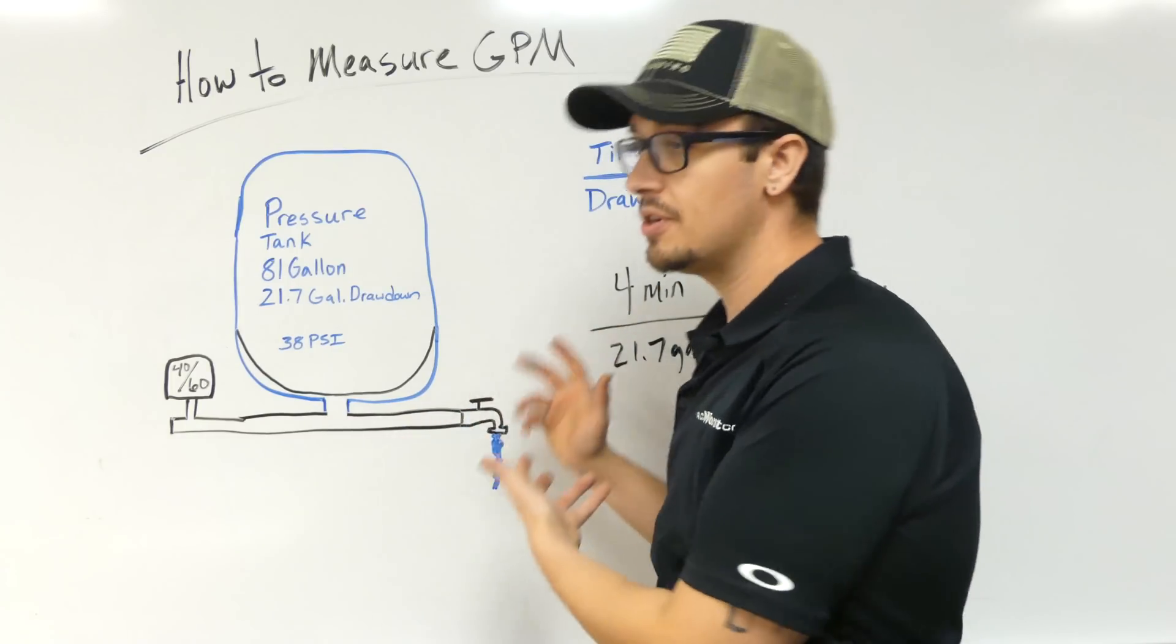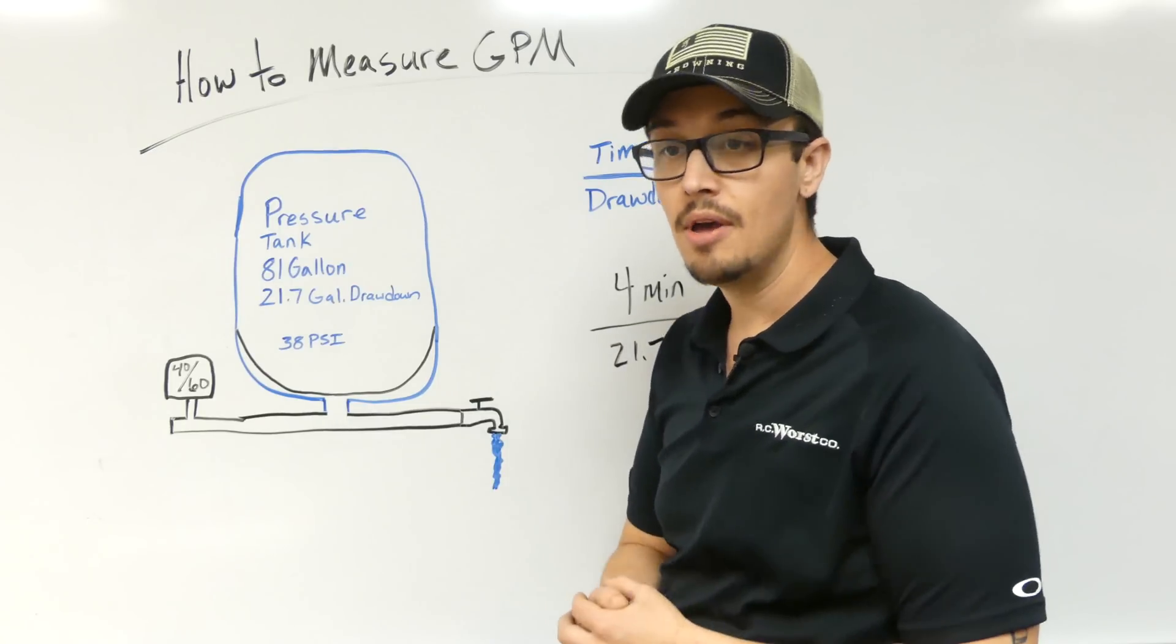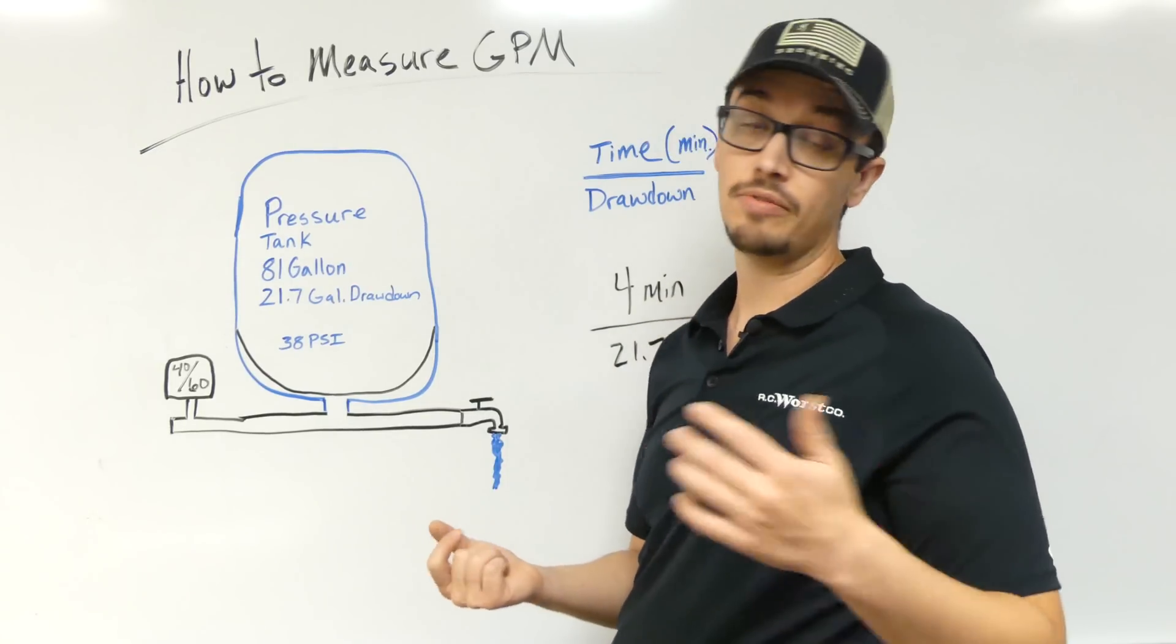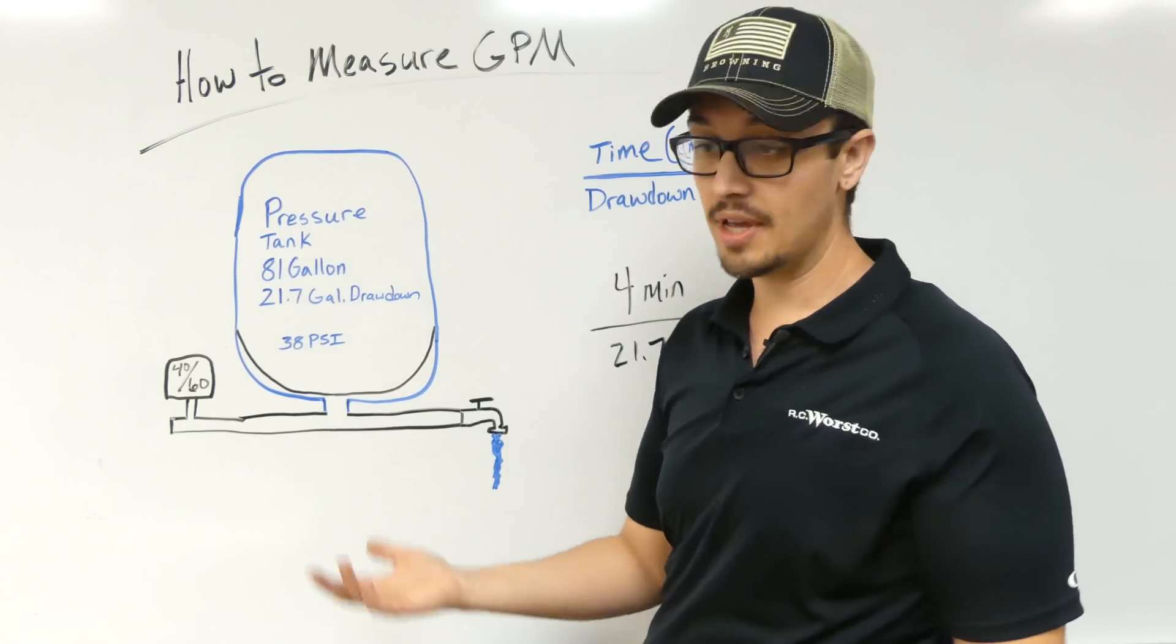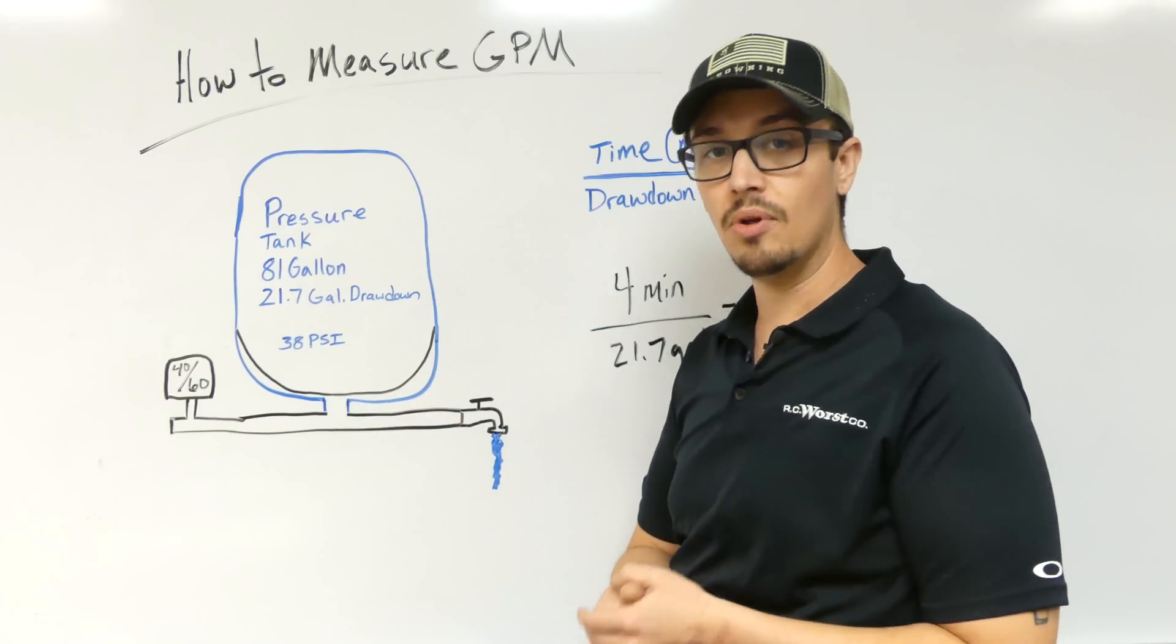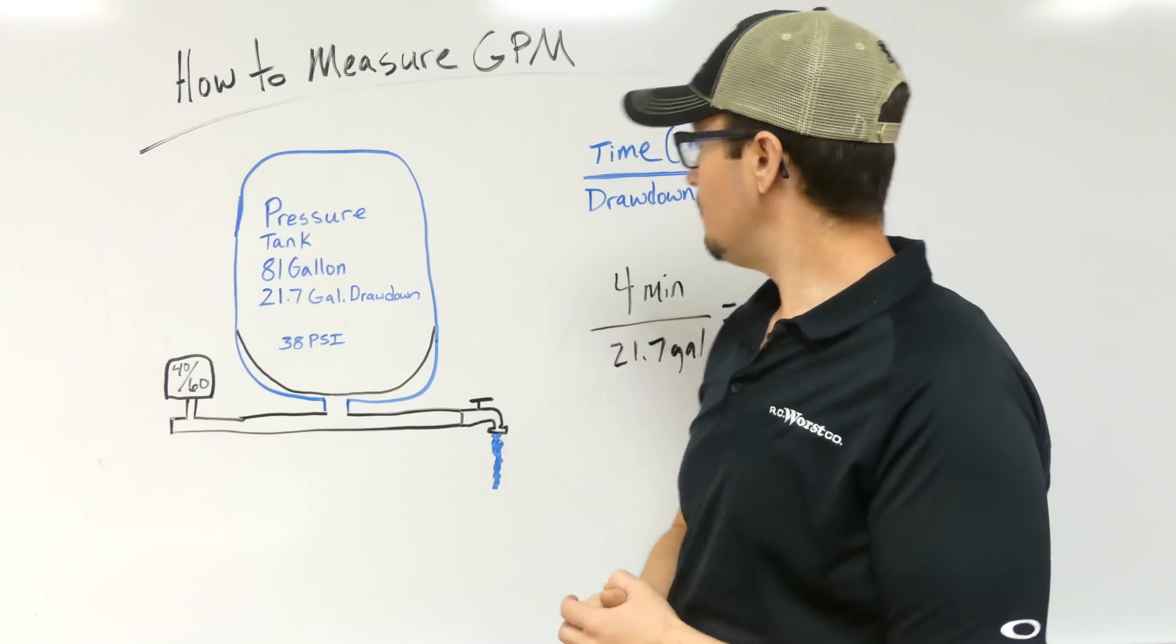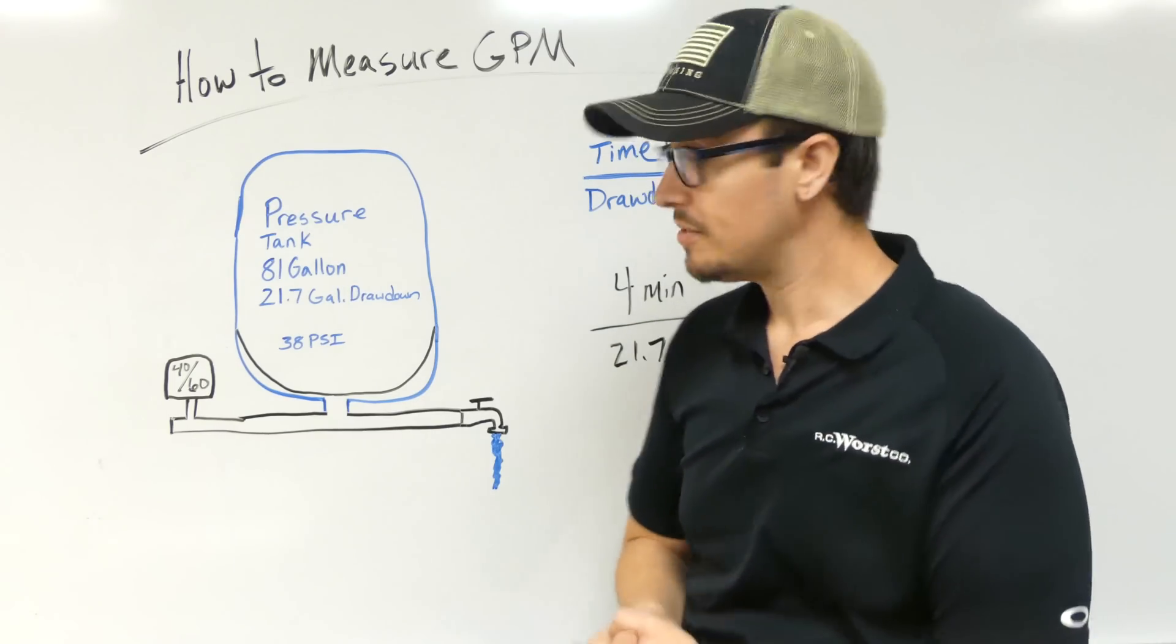This method can be used even without a pressure tank, like the bucket test, where you fill something up, measure how long it takes to fill it up, and if you know how much volume is there, like a five gallon bucket for example, you can do basically the same type of thing.